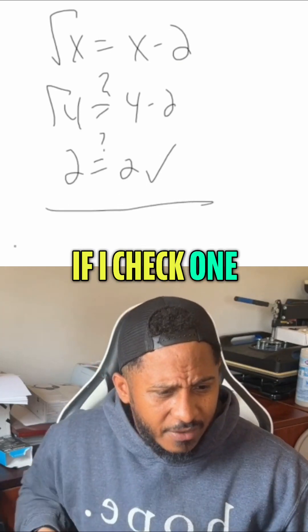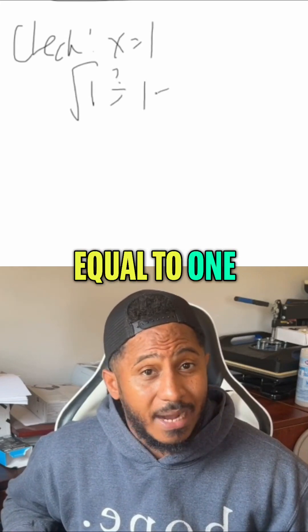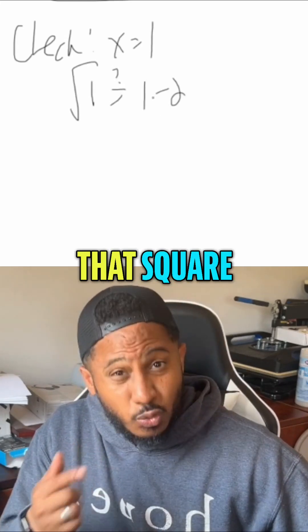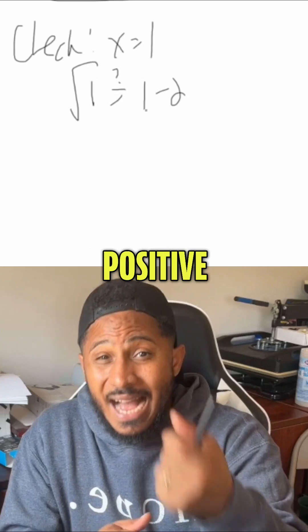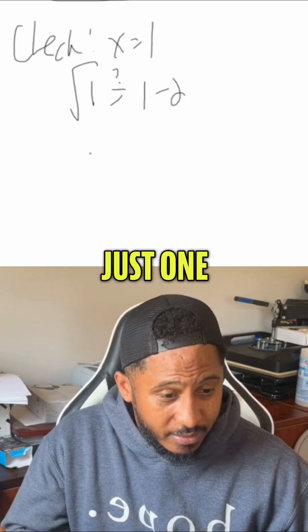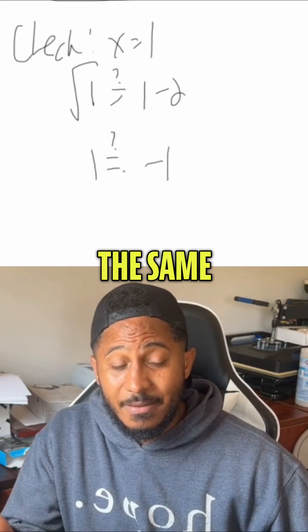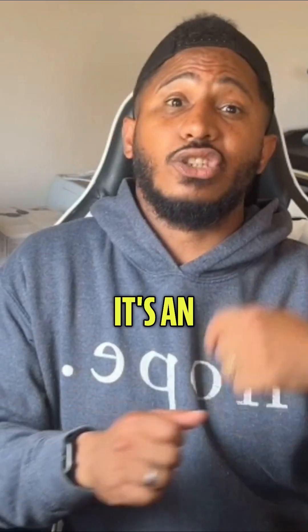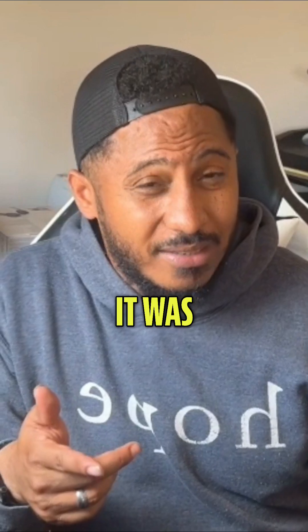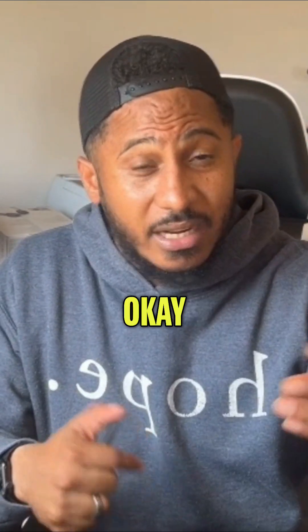But let's check 1. If I check 1, then the square root of 1, is that equal to 1 minus 2? That square root was already there, meaning it's implied the positive version. So the positive square root of 1 is just 1. Is that equal to 1 minus 2 which is negative 1? Those are not the same, meaning 1 is not a solution. It's an extraneous solution, meaning it seems like it was, but it just happened to not be an actual solution to the original equation.